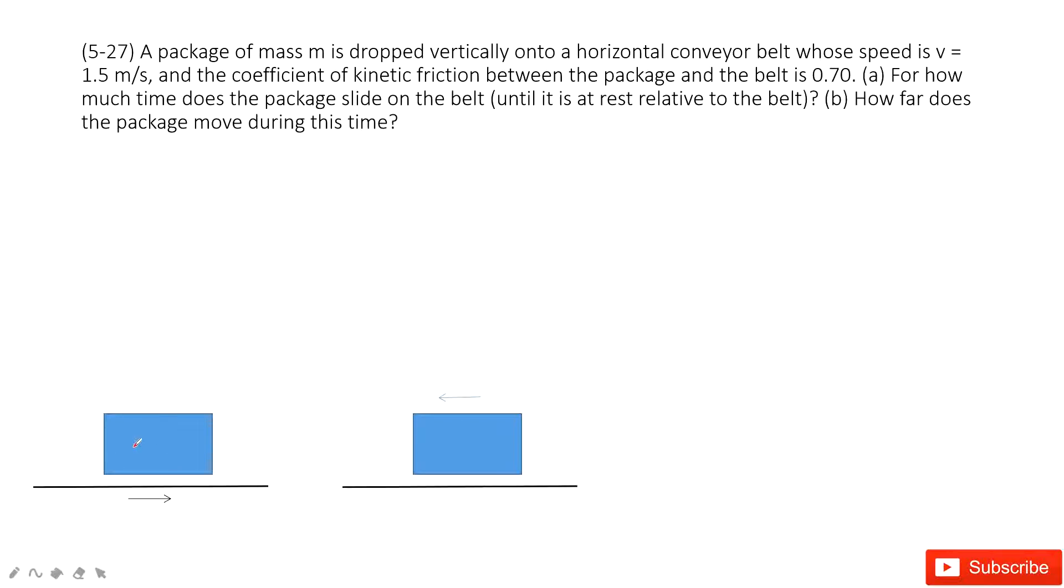You can see in this system, the package is stationary and the belt is moving. This is very obvious. But can we consider the opposite direction? We can consider taking the reference as this belt, so we consider this belt is stationary. And relative to this belt, the package is moving backward.